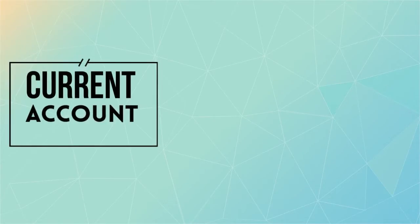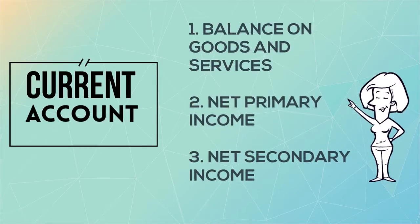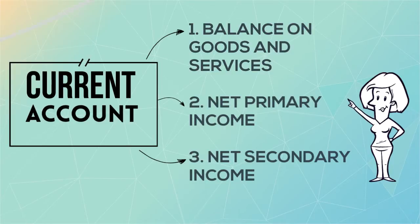So once we have our two accounts they can be broken down even further. The current account can be divided into three smaller accounts: the balance on goods and services, net primary income and net secondary income.